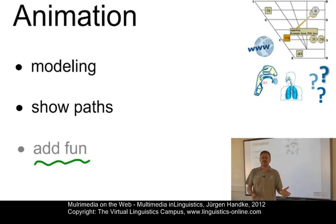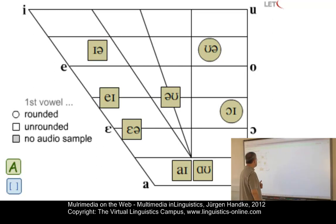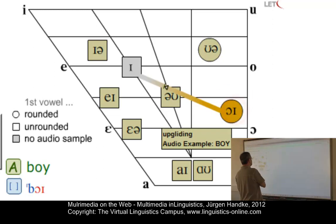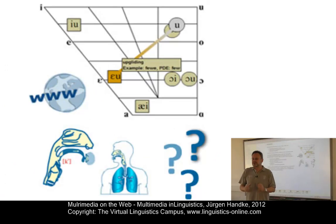Here is a typical example of a simple motion animation where we present diphthongal off-glides. You can see the off-glide — the transition from the nucleus to the off-glide — by means of an animation path.